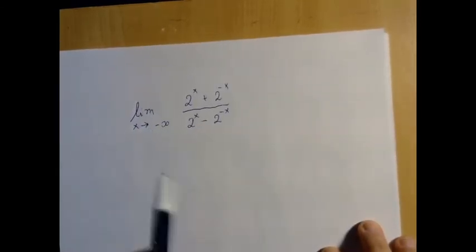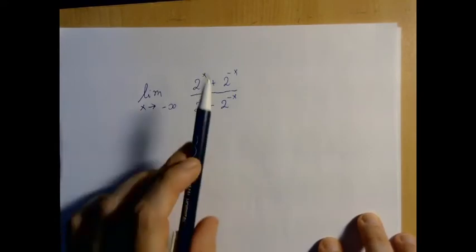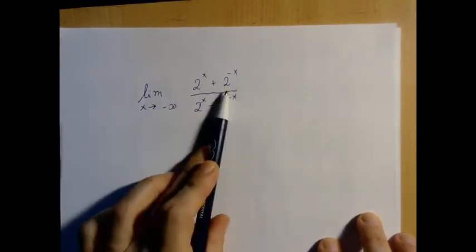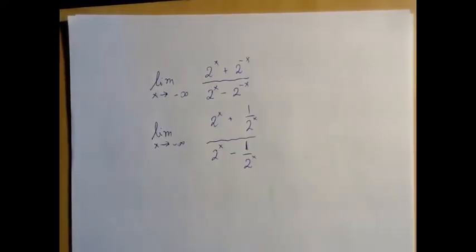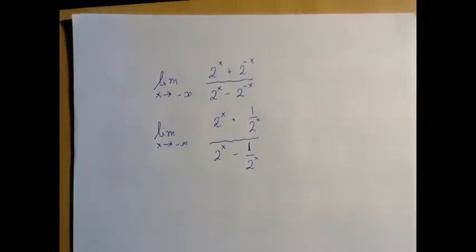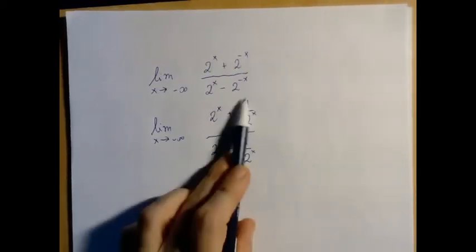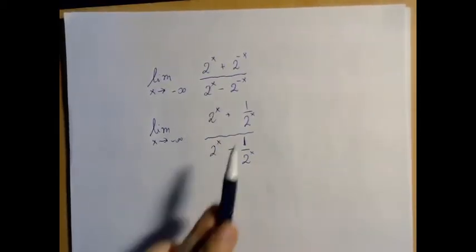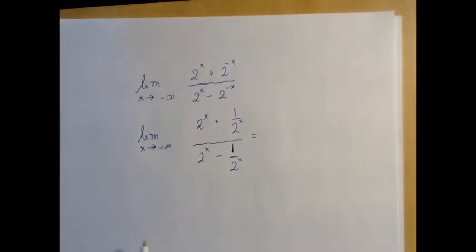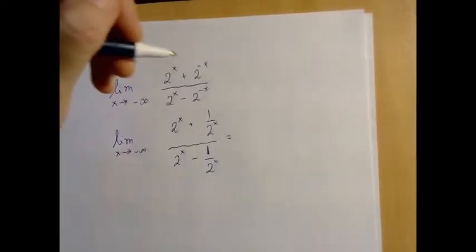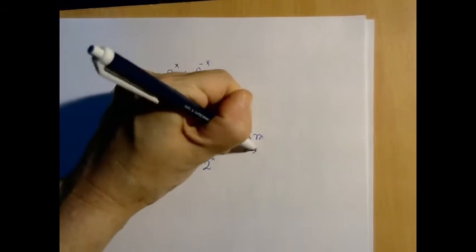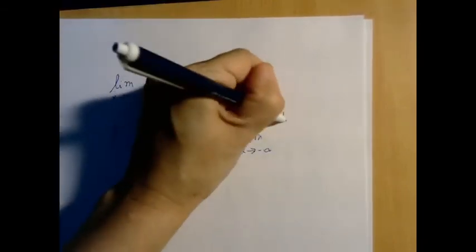So now what do we do? Basically we can do the same thing. This matters, this doesn't. So what matters, we have to factor out. Rewrite 2 to the negative x as 1 over 2 to the x. So now this is the big guy, and this is the small guy. So we're going to factor out the large quantity. So we get limit as x approaches negative infinity of 1 over 2 to the x.